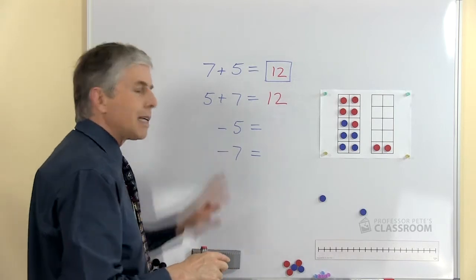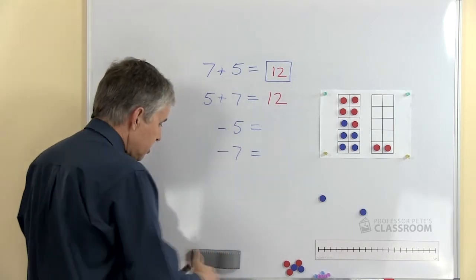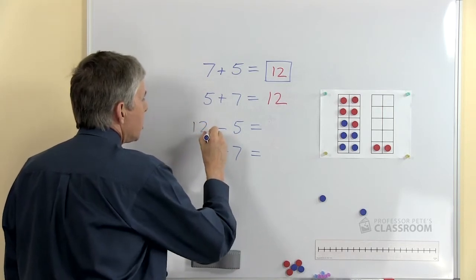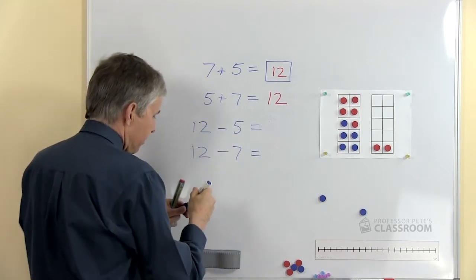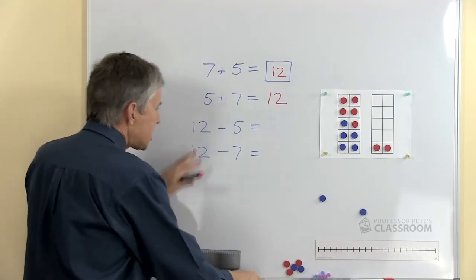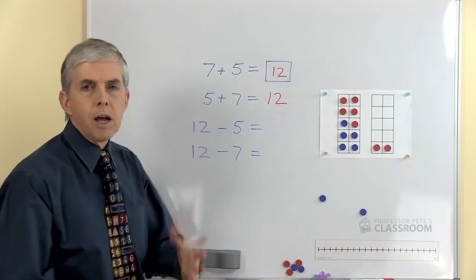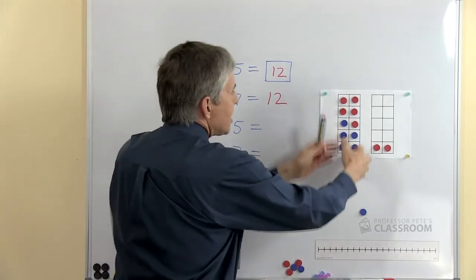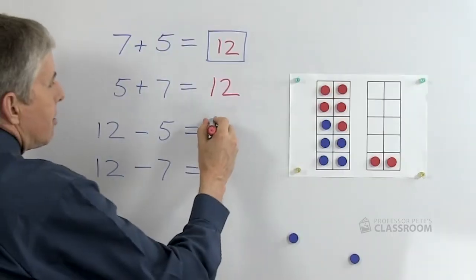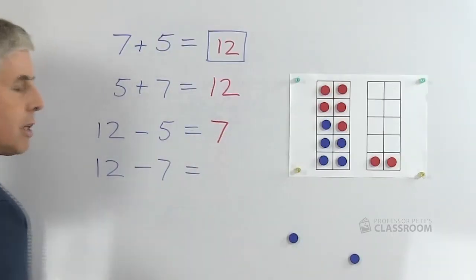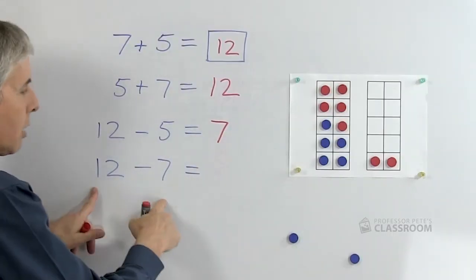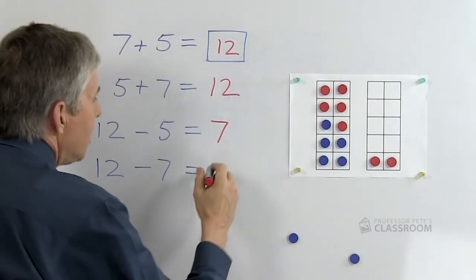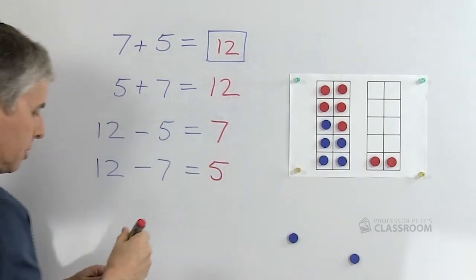But as well as that we could do some takeaway questions. Let me write you two takeaway questions starting with 12. If we started with 12 and took away 5, how many would there be left? Here's 12 — we could take away the 5 blue ones, and of course there are 7 red ones left. And 12 take away 7: we have 12, we could take away 7, and there would be 5 left.